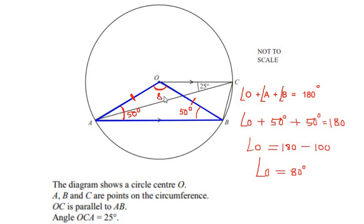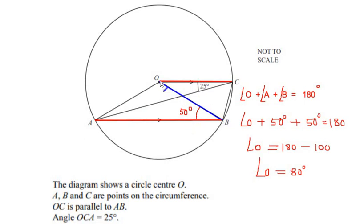Angle O is 80 degrees. Now let us consider the parallel lines OC and AB again. The line OB is acting as a transversal which cuts the two parallel lines at point O and point B. By the alternating angles property of the parallel lines, angle OBA — which is 50 degrees — equals angle BOC, which is also 50 degrees.